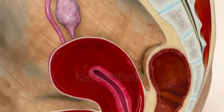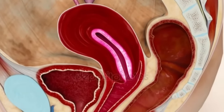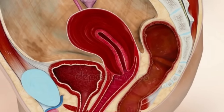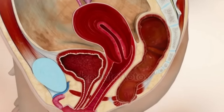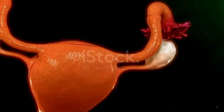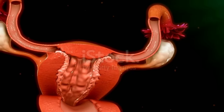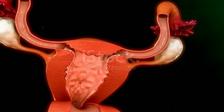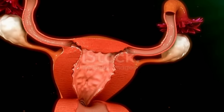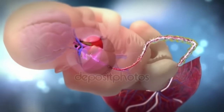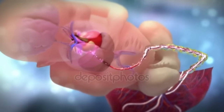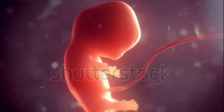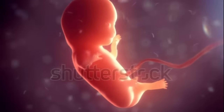The uterus or womb is the major female reproductive organ of humans. One end, the cervix, opens into the vagina, while the other is connected on both sides to the fallopian tubes. The uterus is a pear-shaped muscular organ whose major function is to accept a fertilized ovum, which becomes implanted into the endometrium and draws nourishment from blood vessels which develop exclusively for this purpose. The fertilized ovum becomes an embryo, develops into a fetus, and gestates until childbirth.